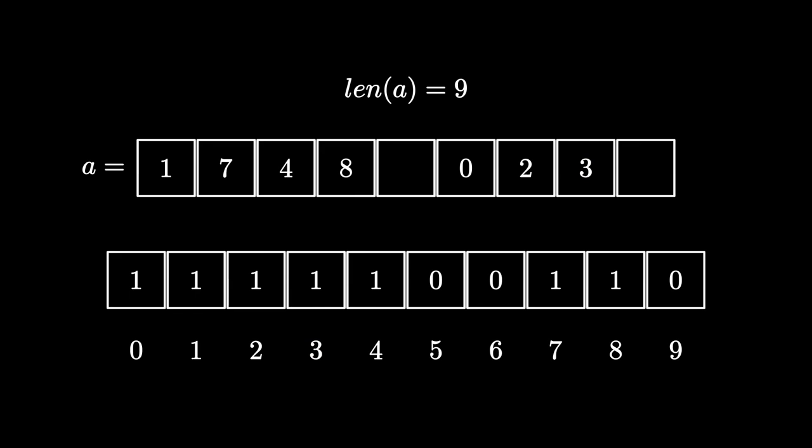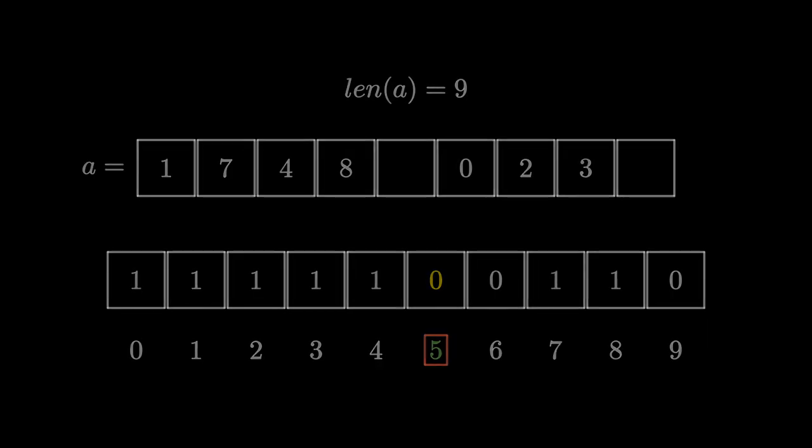Then we'll go through the original array and for all its elements that are not greater than n, we will mark in the additional array that the corresponding number is in the set. After that, we just need to iterate through the positions of the additional array in ascending order and find the first number that we didn't mark. It will be our mex. The time complexity of this solution is, of course, O(n).